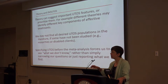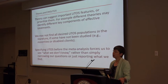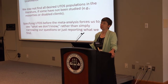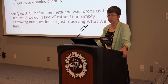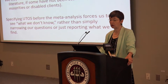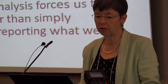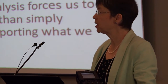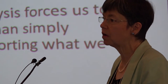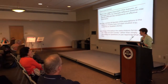Different theories might identify different components. We might not find every population of units — there's been a lot of talk about special populations that haven't been well studied. You might want to study disabled populations and how career interventions work for them, and be out of luck because they haven't been used widely with those populations. So if we specify our U's, T's, O's, and S's before we do a meta-analysis, it's going to force us to see what we don't know, rather than jiggling around our research question.